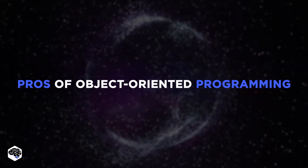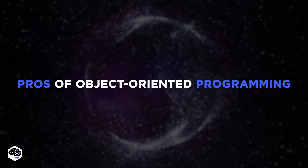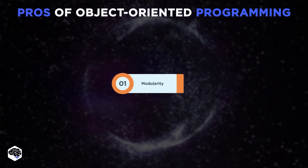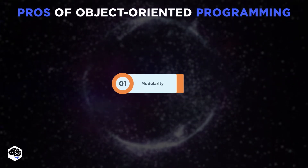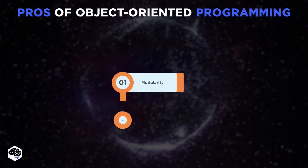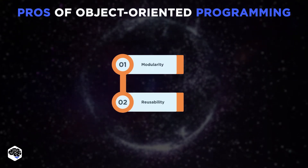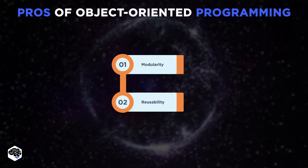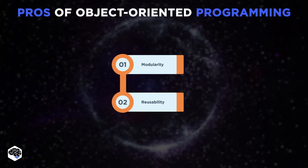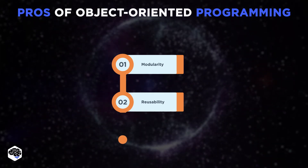Among the benefits of object-oriented programming languages, we define modularity, which breaks an app down into objects and classes. Also reusability — because of inheritance, we can create new classes, reusing the properties and methods of the existing ones.